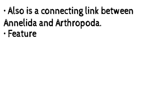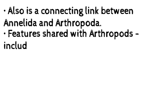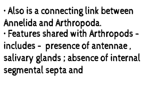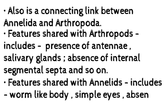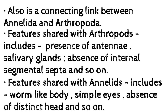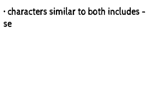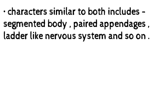Features shared with arthropods include presence of antennae, salivary glands, and absence of internal segmental septa. Features shared with annelids include worm-like body, simple eyes, and absence of a distinct head. Characters similar to both include segmented body, paired appendages, and a ladder-like nervous system.